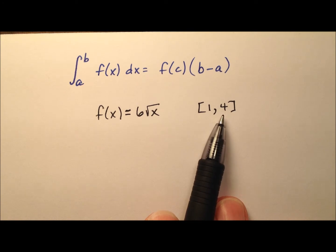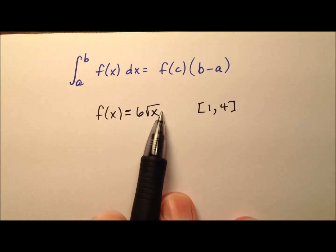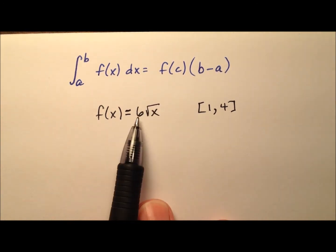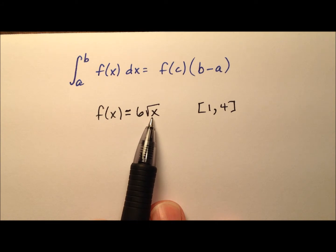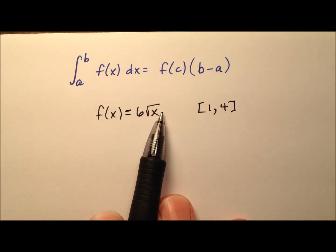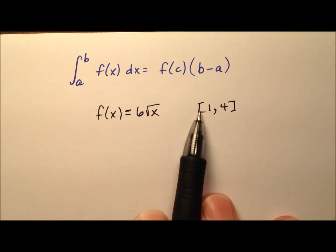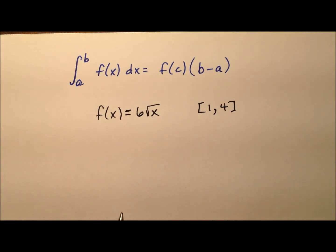One prerequisite that our mean value theorem for integrals has is that this function has to be continuous over this entire closed interval. Thinking about the function 6 times the square root of x, I know this is continuous over its entire domain, and its domain starts at x equals 0 and works its way up to positive infinity. So this closed interval 1 to 4 is within that domain, so we're good to go.